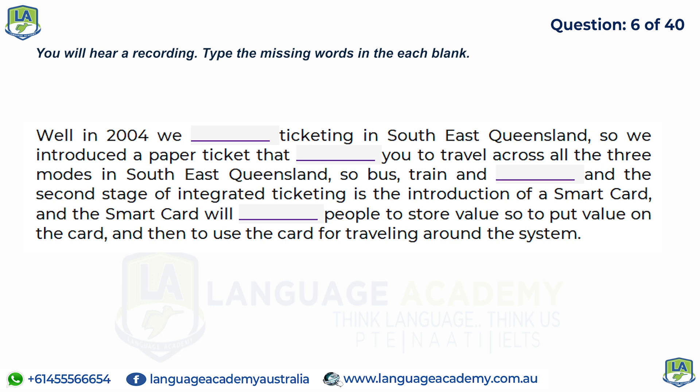So bus, train and ferry. And the second stage of integrated ticketing is the introduction of a smart card, which will enable people to store value — to put value on the card and then to use the card for traveling around the system.